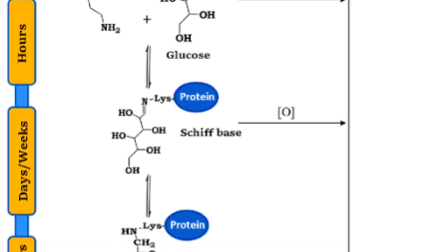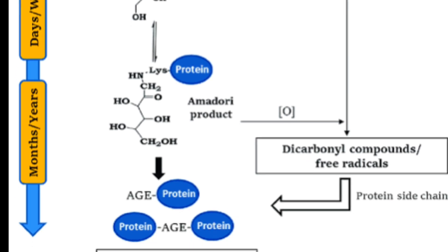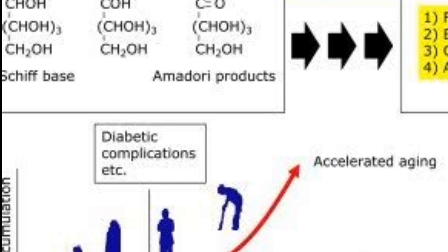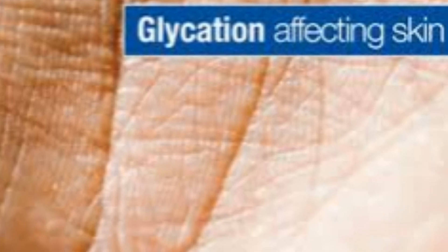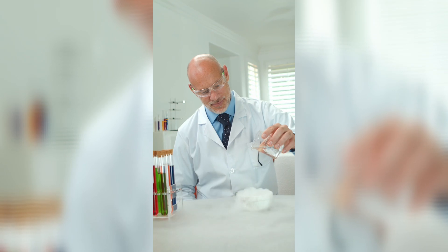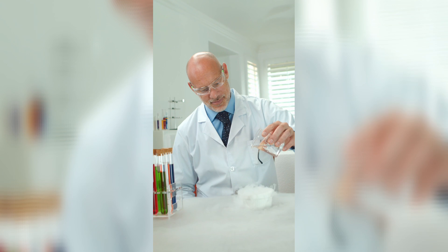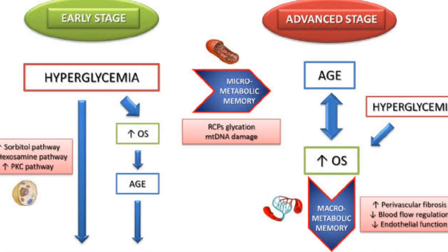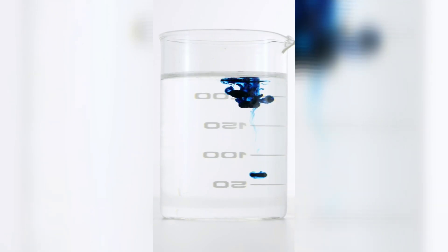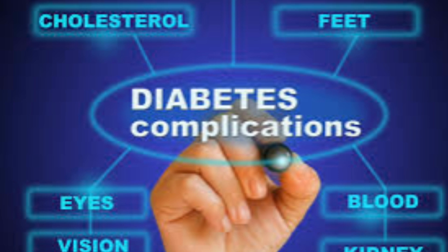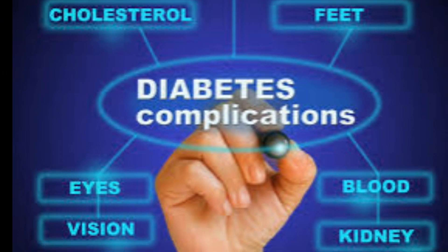Glycation occurs when sugars, particularly glucose, react with amino groups on proteins, lipids, and nucleic acids through a series of complex chemical reactions. This non-enzymatic process leads to the formation of AGEs, which accumulate in tissues and exert their deleterious effects over time. The formation of AGEs is accelerated under conditions of hyperglycemia, where elevated blood glucose levels provide ample substrate for glycation reactions. Consequently, individuals with poorly controlled diabetes are particularly vulnerable to the detrimental effects of glycation.